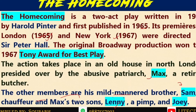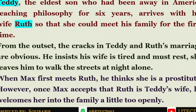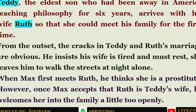Lenny has a very dubious profile — he is actually a pimp — and Joey is a wild youth. At the beginning of the play, Teddy, who is the eldest son, has been away in America for a long time. He is a lecturer teaching philosophy for almost six years. He arrives with his wife Ruth so that she could meet his family for the first time, as they are touring through Europe.